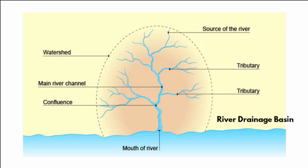A river drainage basin is an area drained by a river and all of its tributaries. Heavy and continuous flow of water erodes the land surface by picking up sand particles along the way, causing land erosion. The land portion that is eroded is lower compared to its surroundings. Basins usually take thousands of years to form.